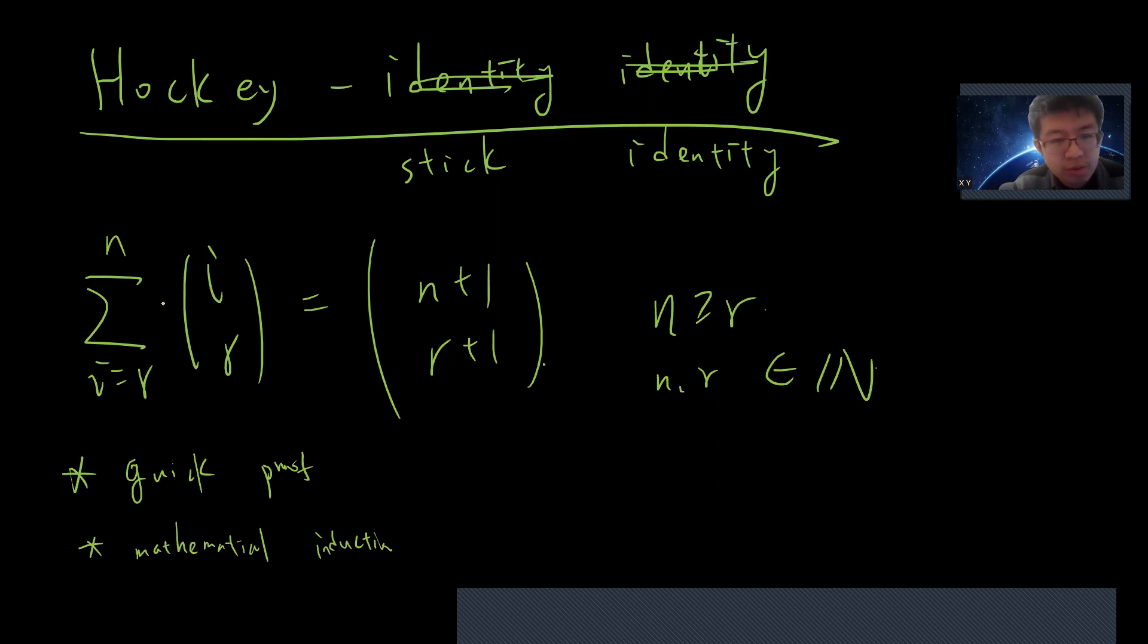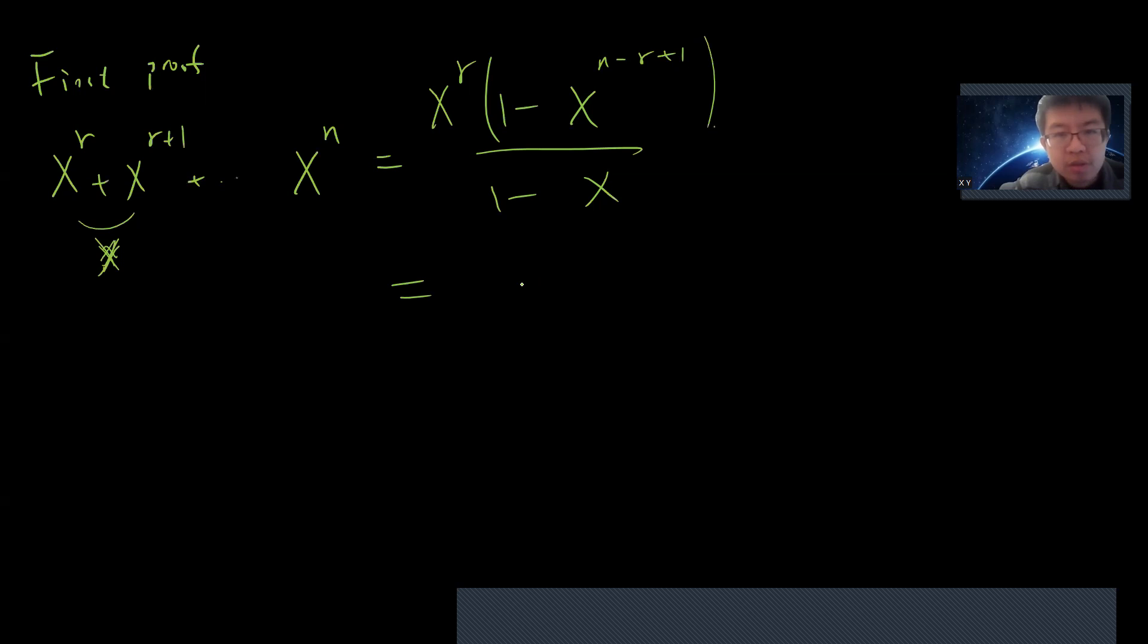So the sum from (r choose r) up to (n choose r). The first proof, I would say, is very amazing, basically an algebra proof. You take x^r plus x^(r+1) up to x^n, and one can compute this as a geometric series, and it's finite so it always converges. The ratio is x, so it's (1-x), and there are (n-r+1) terms. So it will be (x^r - x^(n+1))/(1-x).